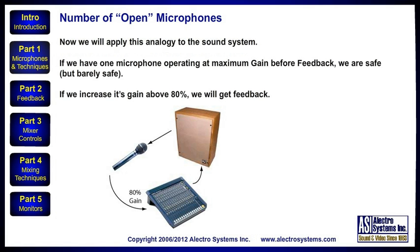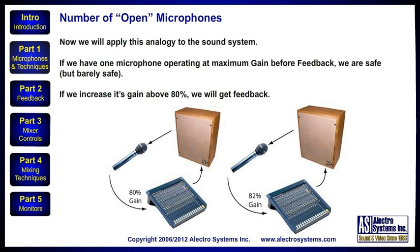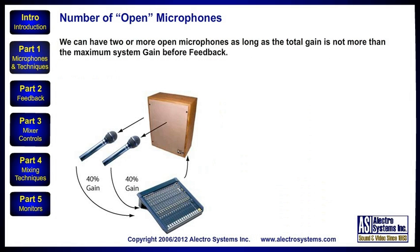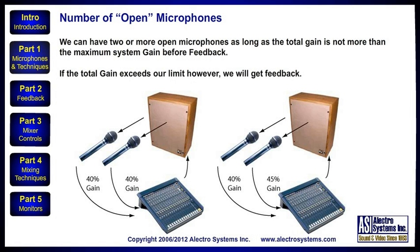Now we can apply this analogy to the sound system. If we have one microphone operating at maximum gain before feedback, we are safe — but just barely safe. If we increase its gain above 80%, we will get feedback. We can have two or more open microphones as long as the total gain is not more than the maximum system gain before feedback. Here we show two operating at 40% — we're just barely okay. But in the lower figure, if the total gain exceeds our limit, we will get feedback. Here we have one microphone at 40% and the other at 45% — that causes feedback.